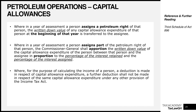Where for the purpose of calculating the income of a person a deduction is made in respect of capital allowance expenditure, a further deduction shall not be made in respect of the same capital allowance expenditure under any other provision of the law. All it means is you cannot take a deduction twice for the same capital allowance expenditure. These are the principles for petroleum operations.